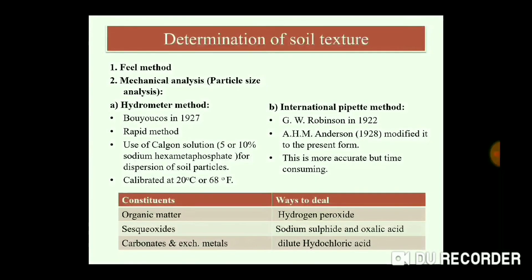Soil texture can be determined by two methods: one is the field method and the other is mechanical analysis, also known as particle size analysis. Under mechanical analysis, there are two methods: the Hydrometer method and the International Pipette method. Most exam questions come from the mechanical analysis part.